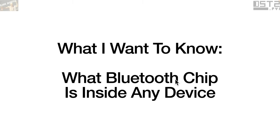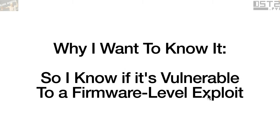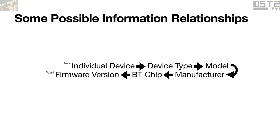Again, as a reminder: what do I want to know? What chip is inside a device, and why? To see if it's vulnerable to firmware-level exploits. You could have knowledge of an individual device by knowing its address — that may not change. Individual device knowledge may or may not give you some information about device type. Device type may tell you something about the model, the model may tell you something about the manufacturer, and the manufacturer may tell you something about the Bluetooth chip, which gets us closer to the firmware version we want.